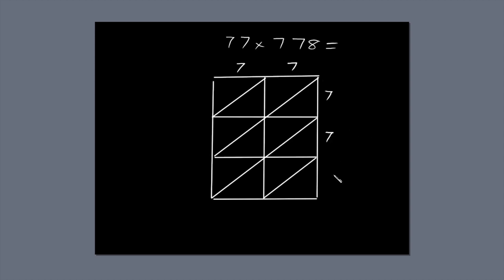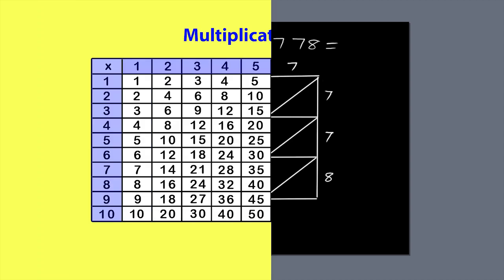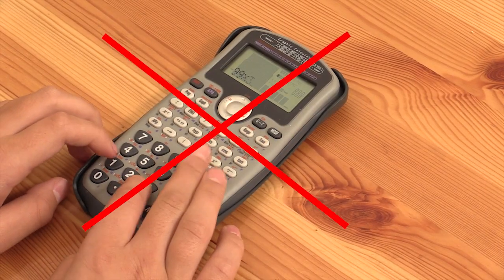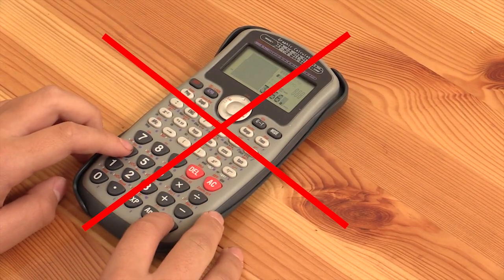Write 778 down the right-hand side of the box, so each digit lines up with a row. Now we're ready to do some multiplication and fill in the blanks with our answers. You'll need to know your times tables. If you're stuck, you can look up a multiplication chart. But you can't use a calculator, because there were none in the Stone Age. I'm just going to start multiplying and show you how to fill in the blanks.